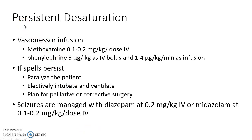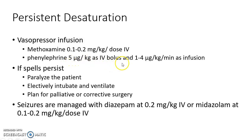If there is persistent desaturation even after the above steps, we have to give vasopressor infusion. Methoxamine can be given at 0.1 to 0.2 mg/kg per dose IV. Another vasopressor that can be used is phenylephrine, given at 5 mcg/kg as an IV bolus and 1 to 4 mcg/kg per minute as an infusion.